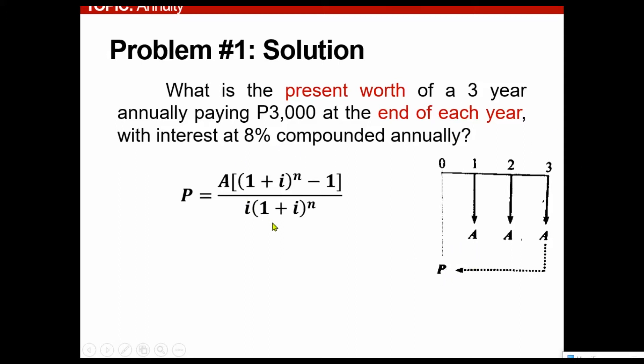And then just substitute what is on the problem itself. Annuity is 3,000, 1 plus 8%, 0.08. As you can see, it is not under mode of compounding concept. However, on our sample problem number 3, for you to have an understanding if, for example, it has a mode of compounding. So there is an example for that. For a different rate, so basically it is annually.